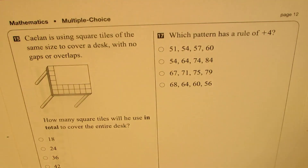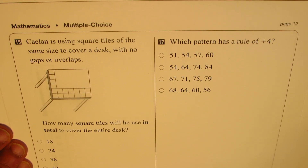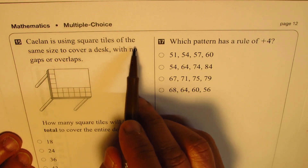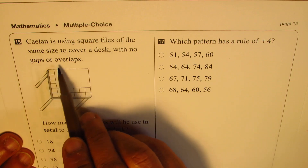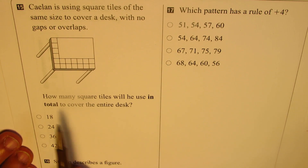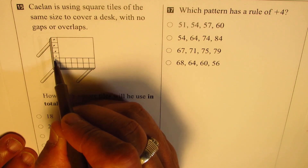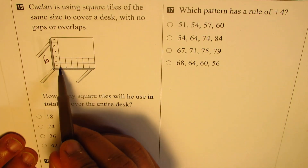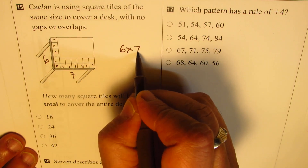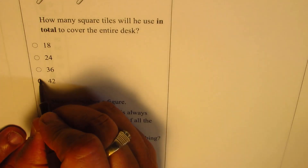Question number 15: Salen is using square tiles of the same size to cover a desk with no gaps or overlaps. How many square tiles did he use in total? Let's count — there are 6 tiles in one direction and 7 in the other. So it is rows times columns: 6 times 7 equals 42. So 42 is the right answer, and we will fill in 42.